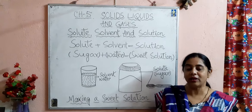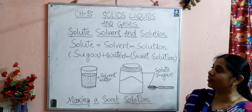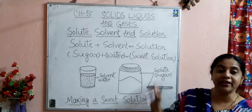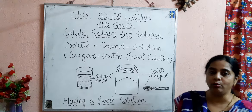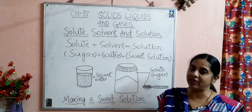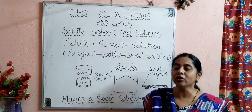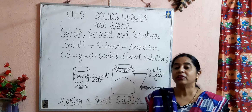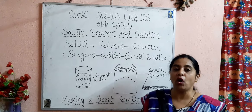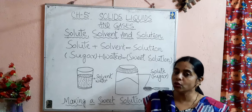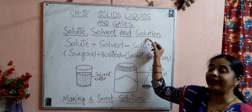Hello students, welcome back to the science class. This is the fourth class of the chapter Solids, Liquids and Gases. In our last classes, we learnt about metals, different states of metals, features of different metals, and how the different states of metals are interchangeable on either heating or cooling. Today, we will learn about solute, solvent, and solution.